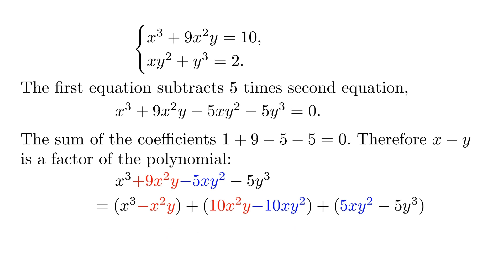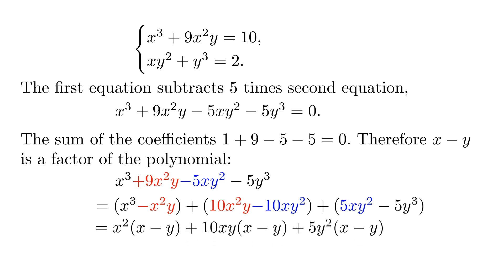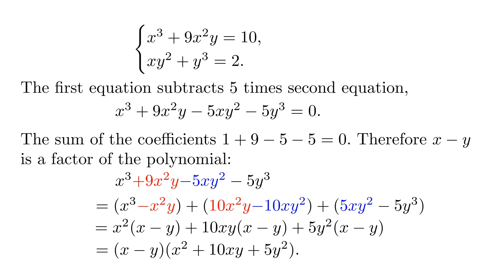We can separate 9x²y into two terms: −x²y and +10x²y. Also, separate −5xy² into two terms with coefficients −10 and +5. For each of the three groups, we do the factoring and we can see each of them contains a factor of (x − y). The idea behind this is actually long division.